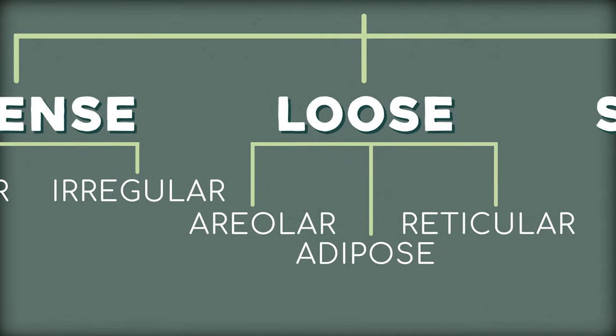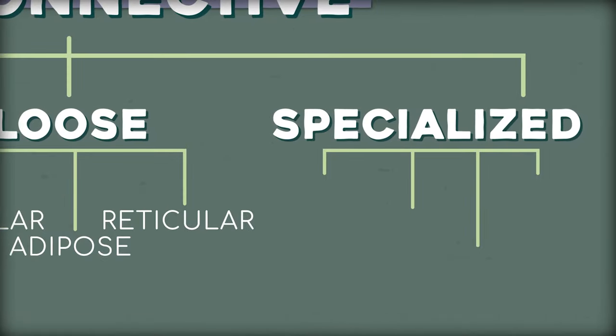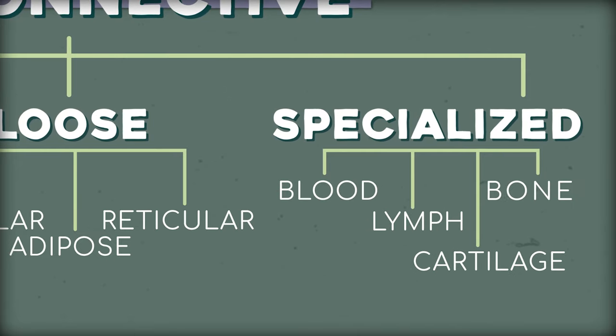Anatomists are terrible at naming things — to make things worse, that layer of dense irregular tissue in the dermis is called the reticular layer, despite not being reticular tissue. And that adipose tissue in the hypodermis is loose connective tissue. I know it doesn't seem like it's connecting anything to anything, but when you imagine loose connective tissue more as support than connection, it becomes more clear. I hesitated to call adipose tissue loose connective tissue because some sources said it was loose while others said it was firmly a specialized connective tissue — in the same category as blood, lymph, cartilage, and bone, our final flowchart category.